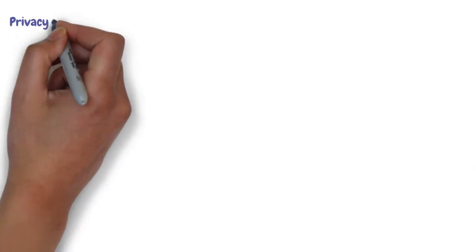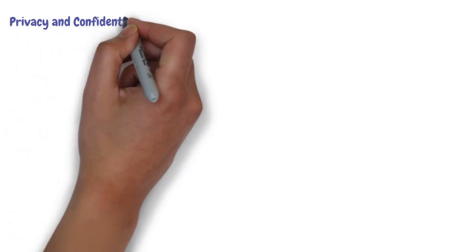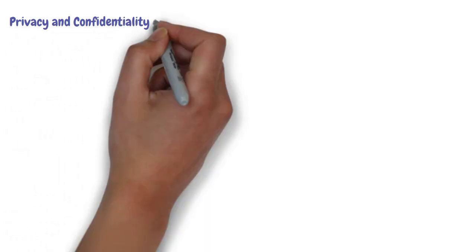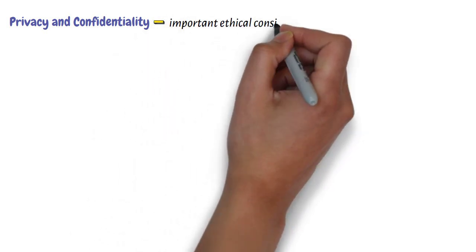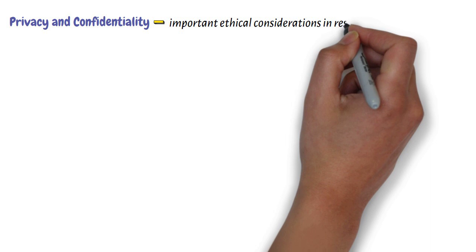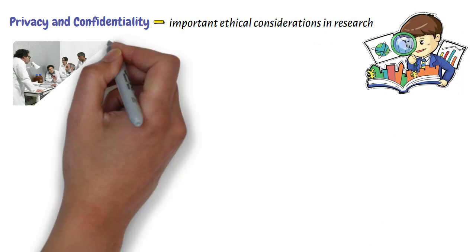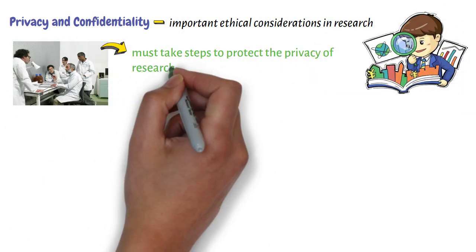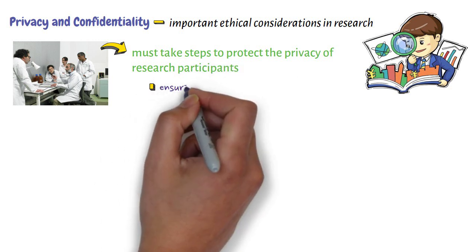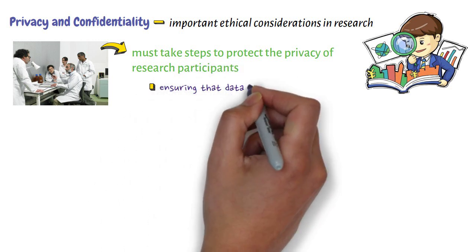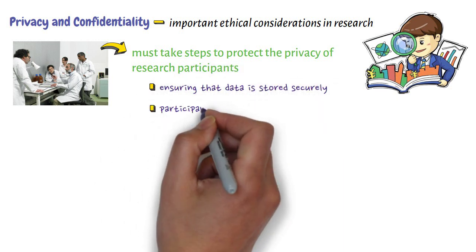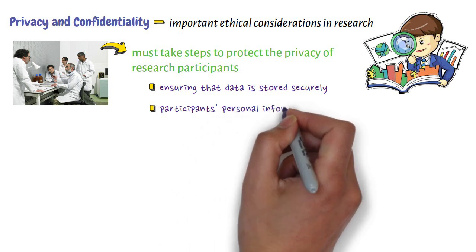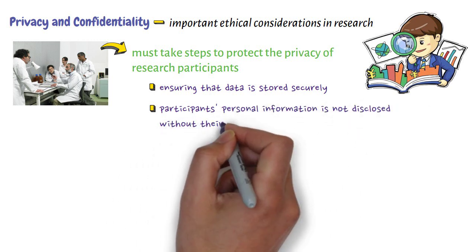Second, privacy and confidentiality. Privacy and confidentiality are important ethical considerations in research. Researchers must take steps to protect the privacy of research participants, such as ensuring that data is stored securely and that participants' personal information is not disclosed without their consent.